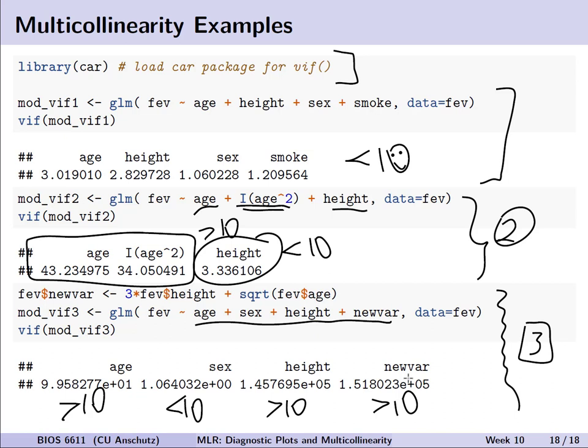In summary, this lecture introduced ways to evaluate assumptions in the multiple linear regression framework — including modifications to diagnostic plots from simple linear regression — while also examining how to evaluate potentially highly correlated predictors that may distort our model's interpretation or results.